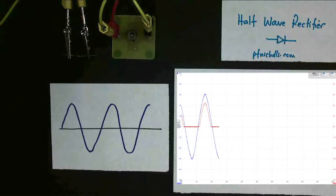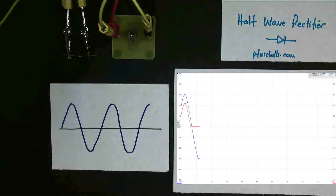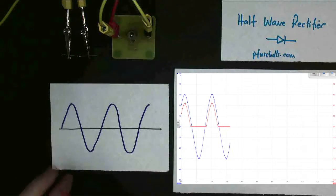Well, there it is. You can see the blue line, the power supply, this one here, continues to go positive and negative, but the voltage across the bulb, the red line, only goes positive. It does this.